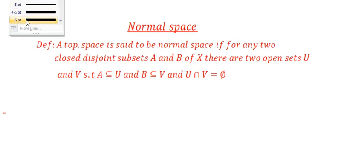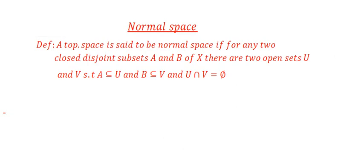In the definition, what do you need in a topological space to be a normal space? You need two closed sets in X which are closed and which are disjoint.